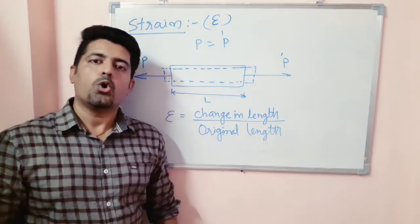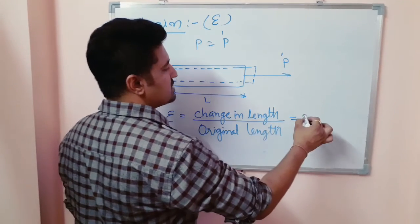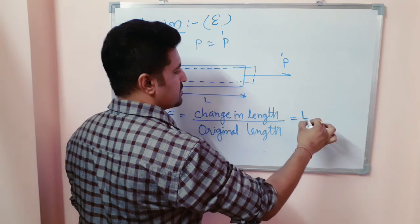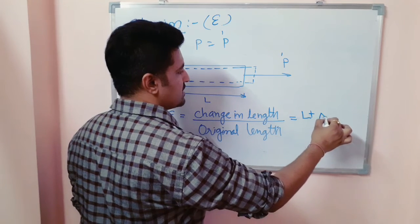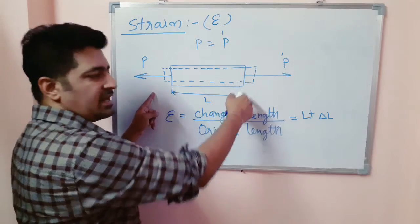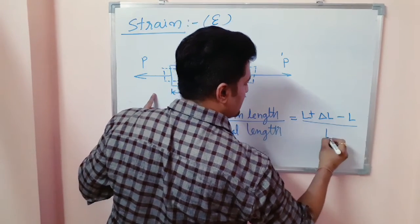Change in length upon original length. So here we will talk about change in length. Length is L plus delta L minus L upon L.